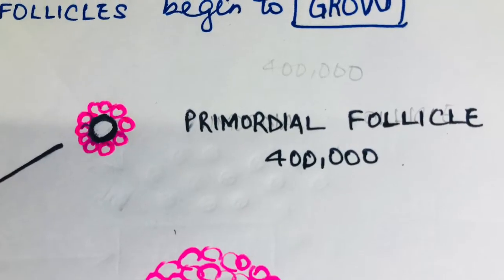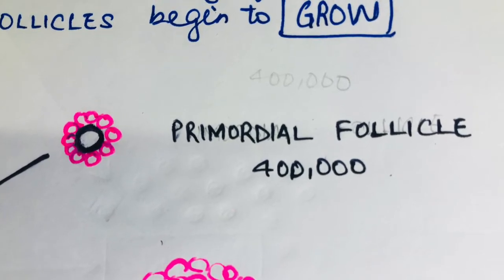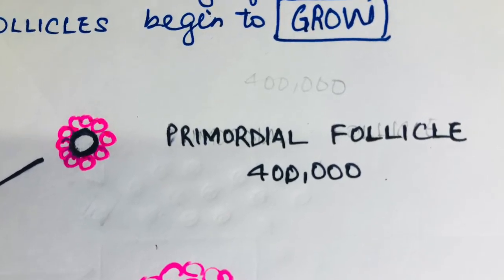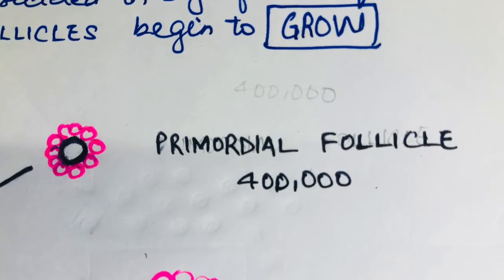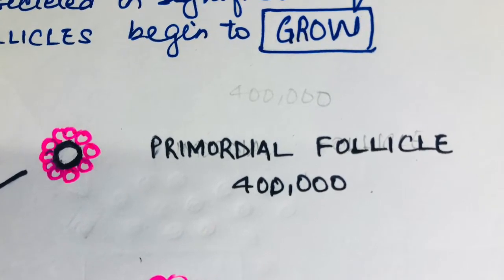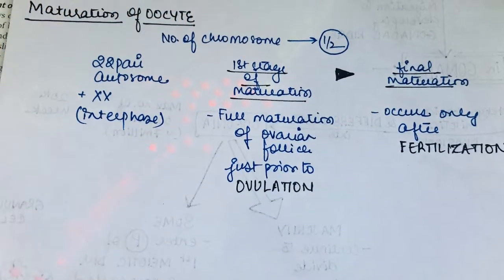These primordial follicles are nothing but primary oocytes in the center surrounded by flat granulosa cells. Now these primary oocytes stay in their resting stage, that is the early prophase, till puberty. This oocyte matures in two stages: the first stage occurs during ovulation and the next stage occurs during fertilization.